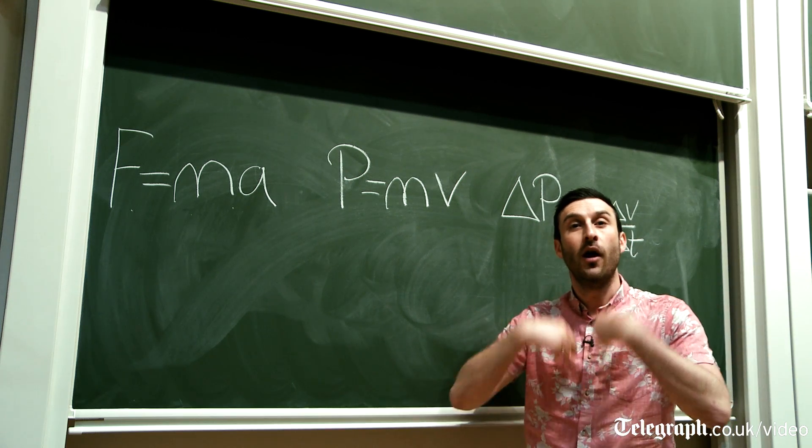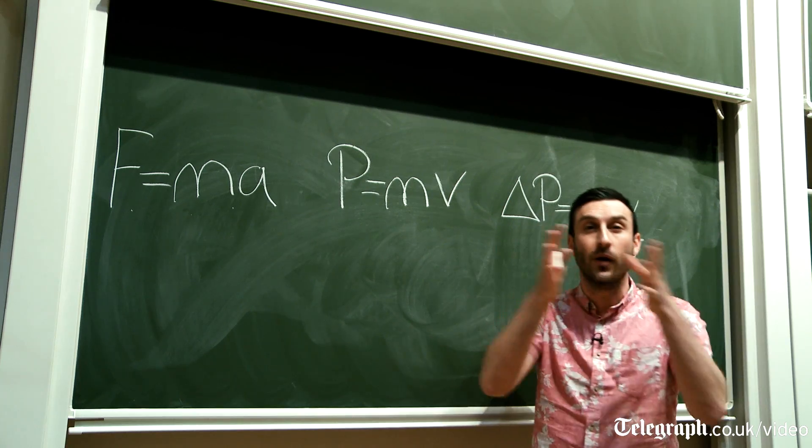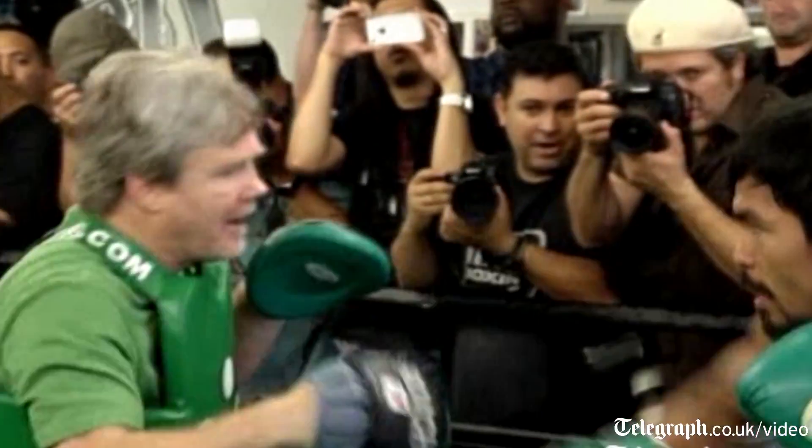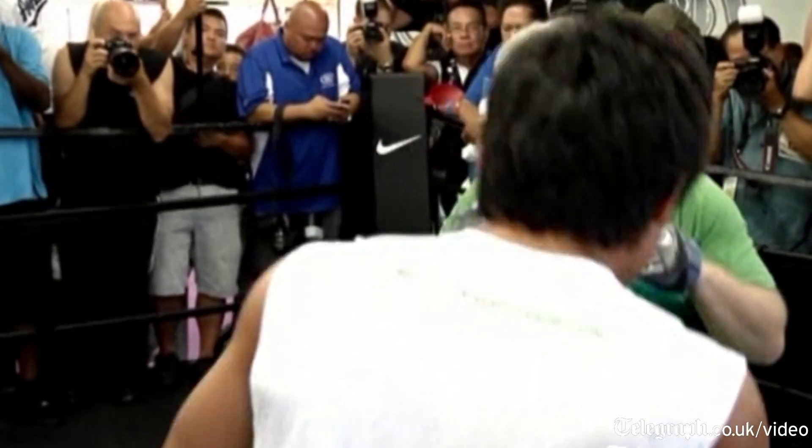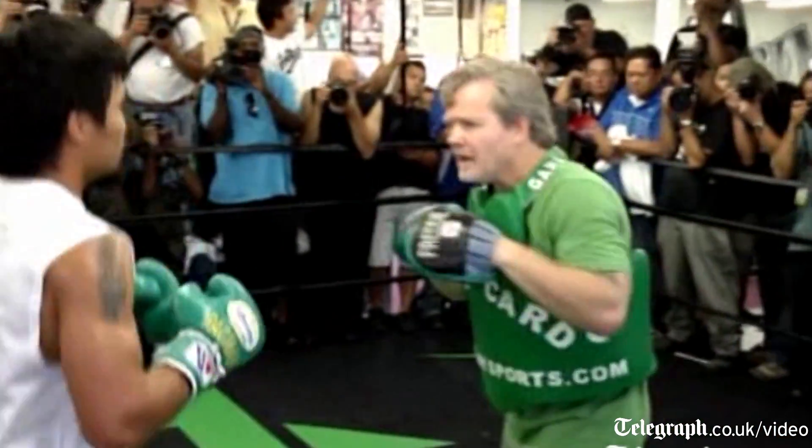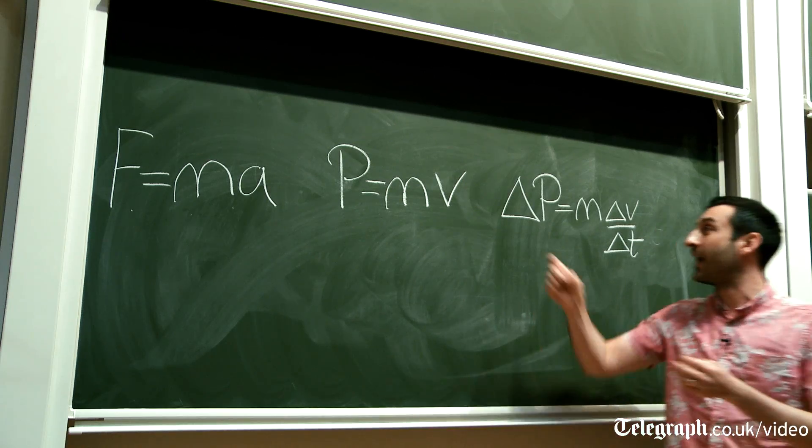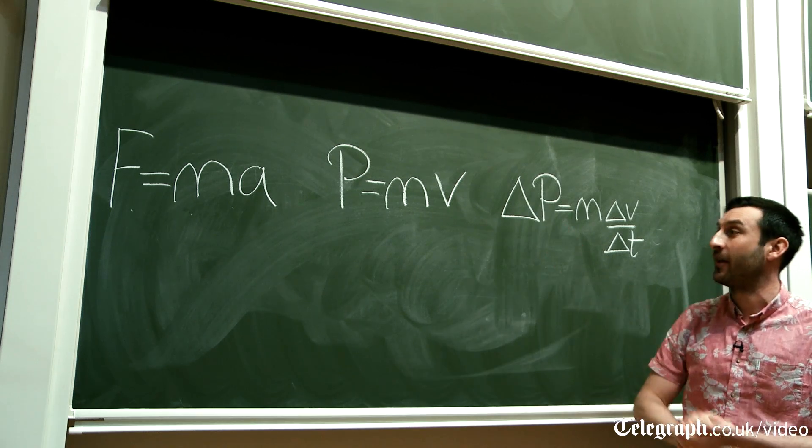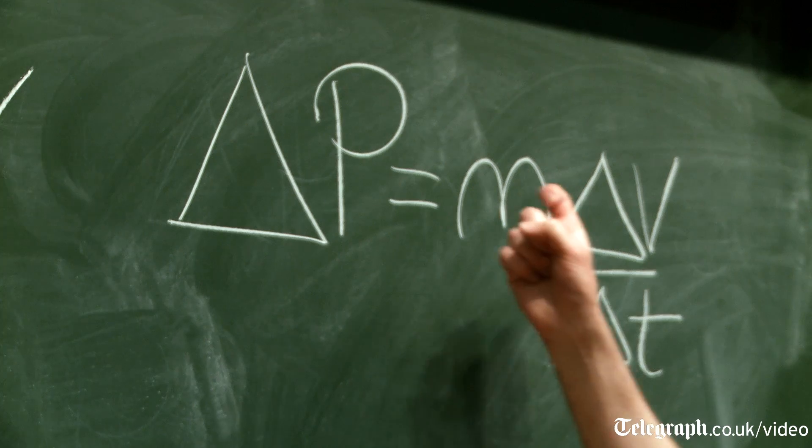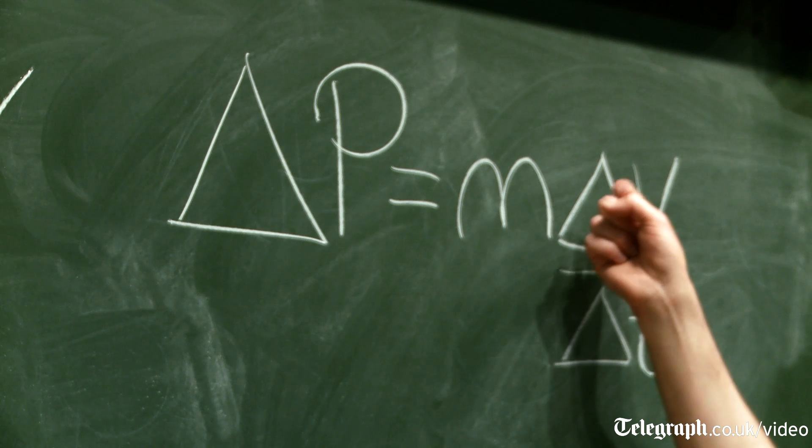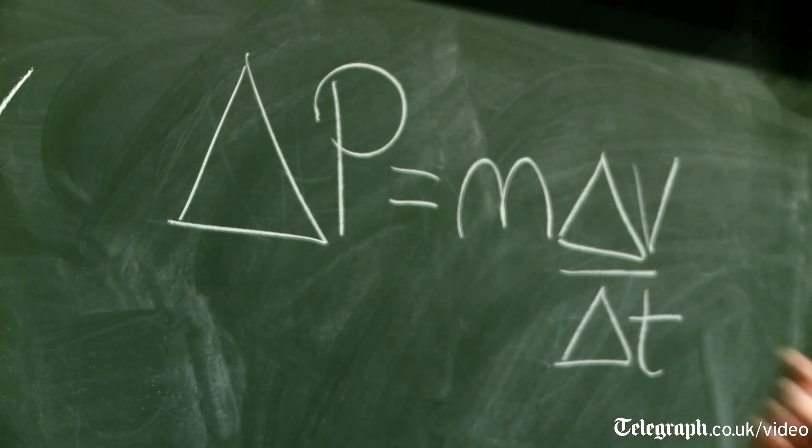That's a good example of momentum being transferred from one object to another. Now in boxing, you're transferring momentum from the boxer's fist to the opponent's head. And there's a good equation for that, and that is the change in momentum, and that's equal to the mass times the change in velocity over the change in time.